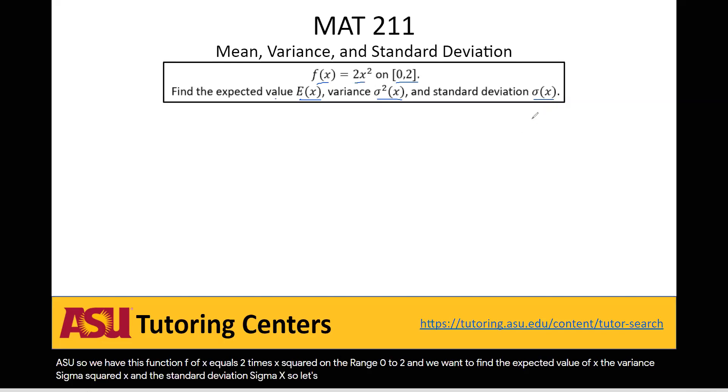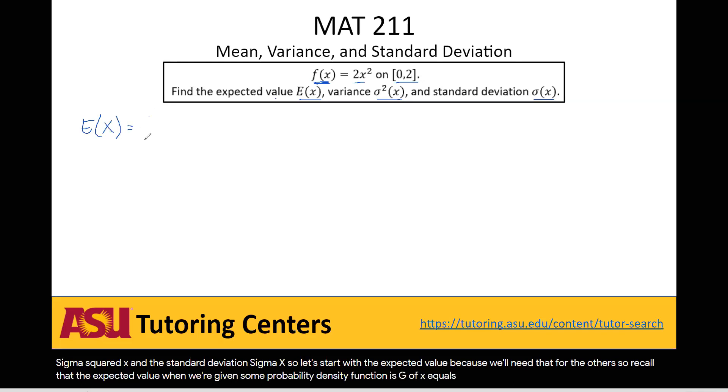So let's start with the expected value because we'll need that for the others. So recall that the expected value when we're given some probability density function is E(x) equals the integral from negative infinity to positive infinity of f(x) times x dx.